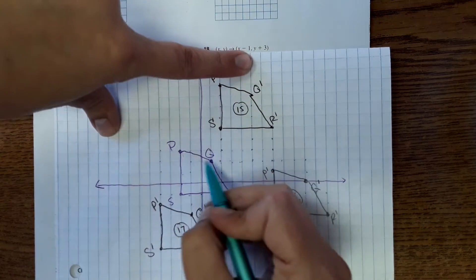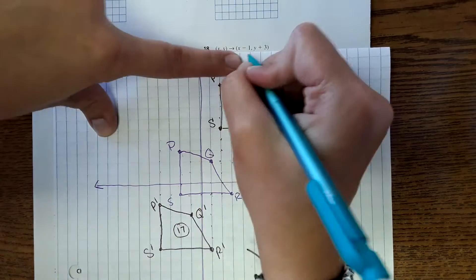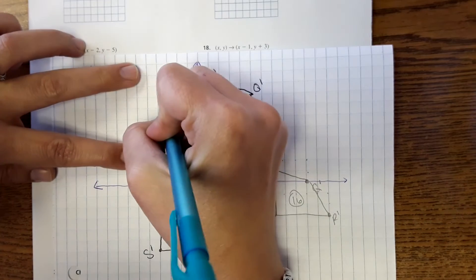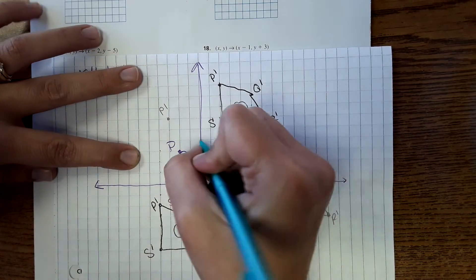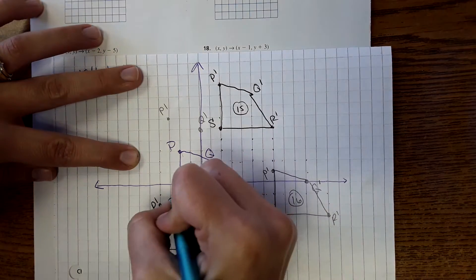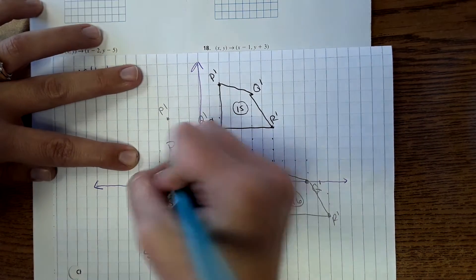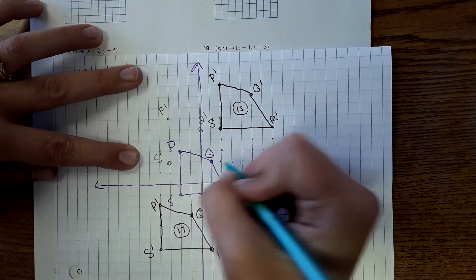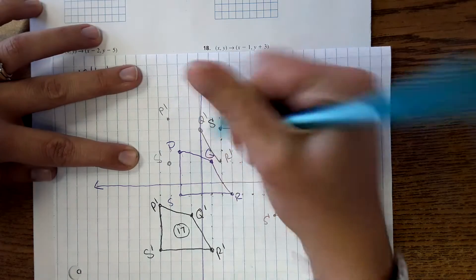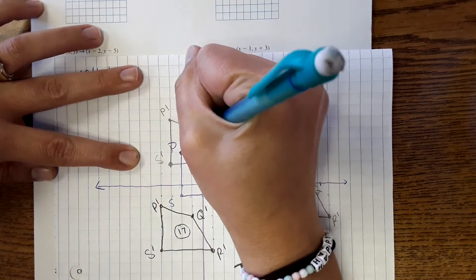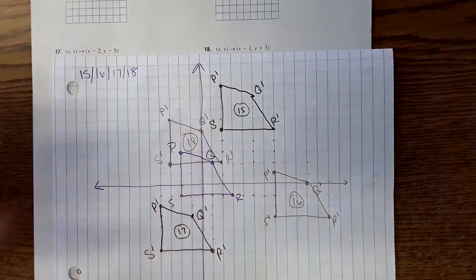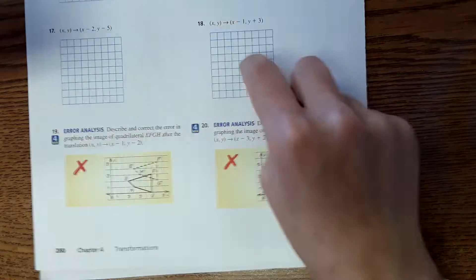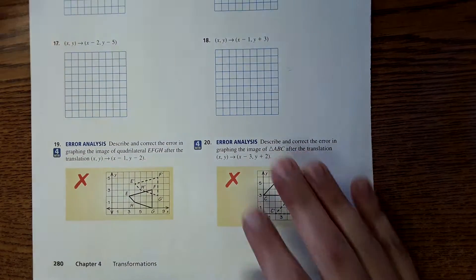And then 18. Again, same original shape. I'm going to go to the left one now and up 3. And there we go. And this would be number 18. Okay, so there is 15, 16, 17, 18. And again, you'll have to attach this to your packet and turn it in with it.